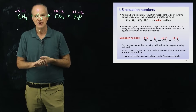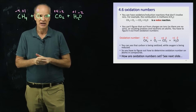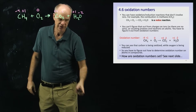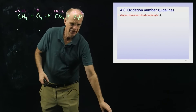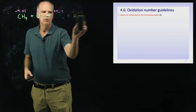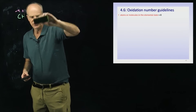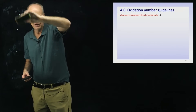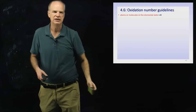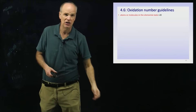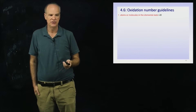At this point, you have to learn how to assign oxidation numbers. Let's go to the next slide and go over that right now. One of the things you'll have to remember is that whenever you have an atom or a molecule in an elemental state, the oxidation number is set to zero.